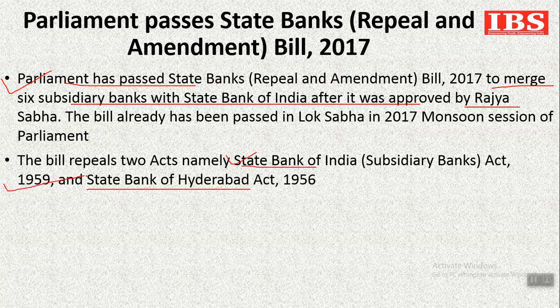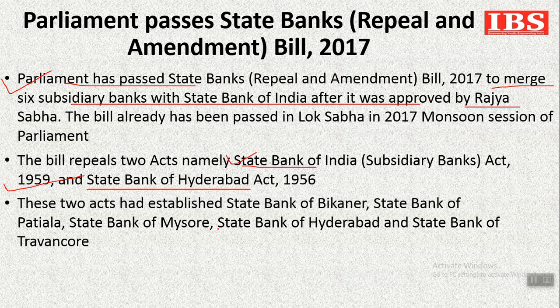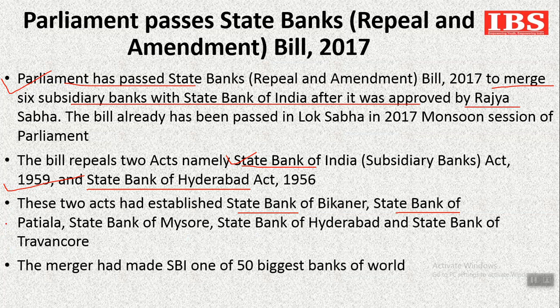Due to these two acts, the banks that were created — State Bank of Bikaner and Jaipur, State Bank of Patiala, State Bank of Mysore, State Bank of Hyderabad, and State Bank of Travancore — these 5 banks will be merged into SBI. Due to this merger, SBI has become one of the 50 biggest banks in the world.